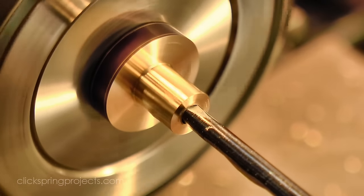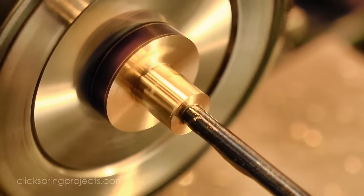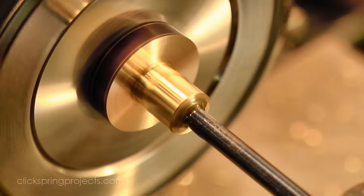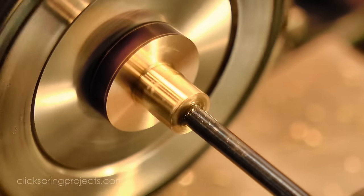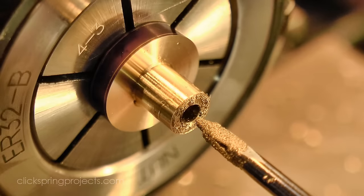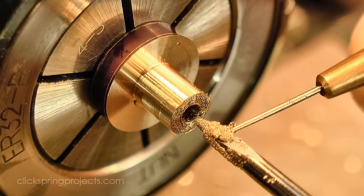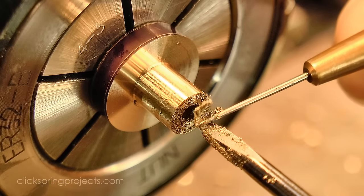Now there are a few drawbacks to using this sort of reamer. It has no flutes, so it needs to be backed off regularly to clear the chips, particularly if using it on steel. It also can't really cut very much metal, just a few thou, so the initial drill size selection is important. If the sizing is correct, the chips coming off will be very fine, like this.